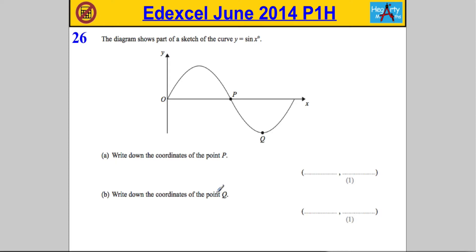Then we're asked to write down the coordinates of point Q. Now in order to work this out, we have to have some understanding of exactly what this graph looks like. You need to know it off by heart, sine x and cos x.